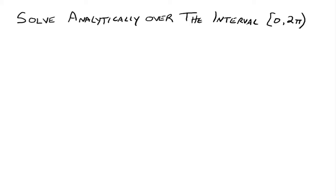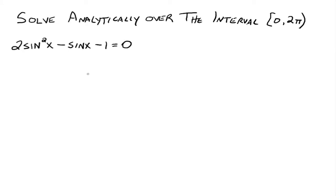Let's try another one. We have 2 sine squared x minus sine x minus 1 equals 0. What I'd like you to see is that this is really similar to a quadratic equation. How would we deal with quadratic equations? We factored them, or used the quadratic formula. In this case, this one does factor.